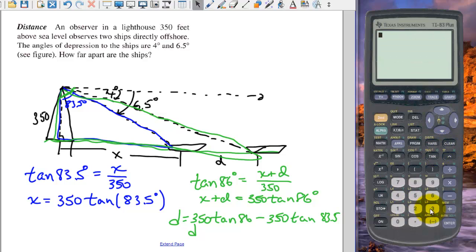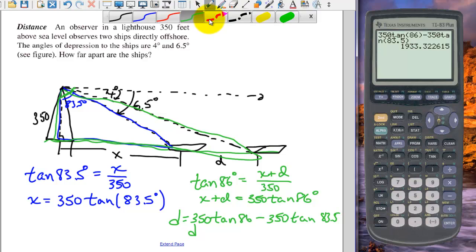And we can bring up our calculator to get our answer here. So 350 times the tangent of 86 minus 350 times the tangent of 83.5. And we get that the two ships are about 1,933 feet apart.